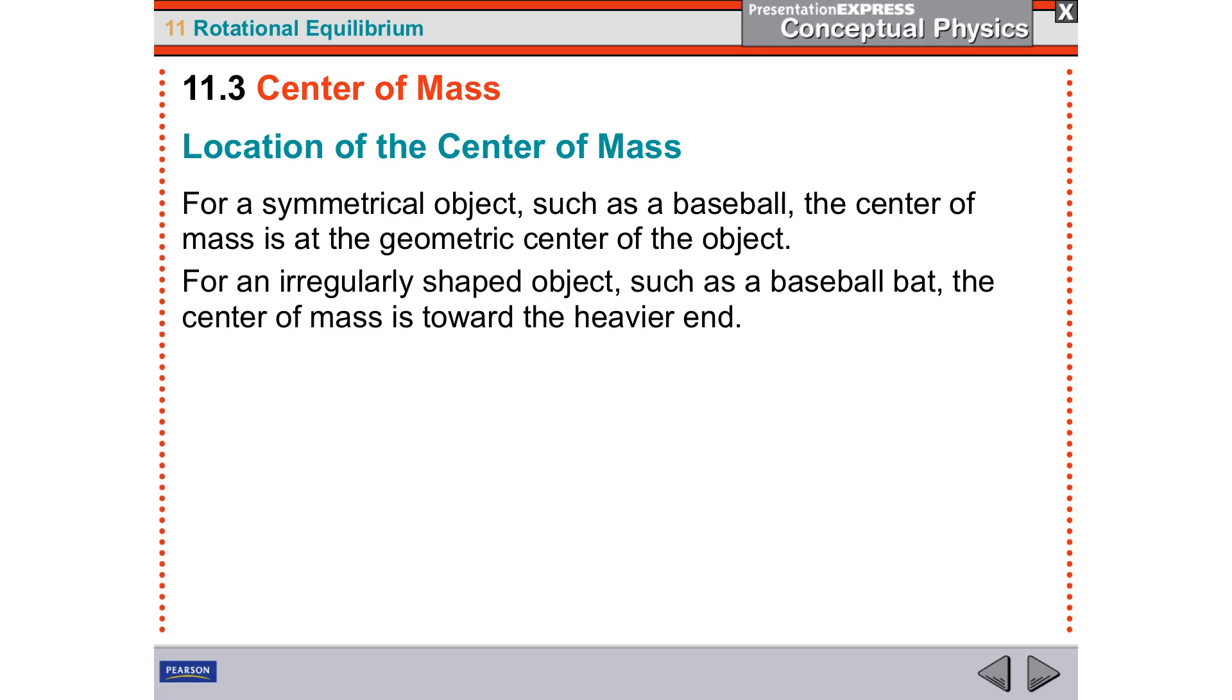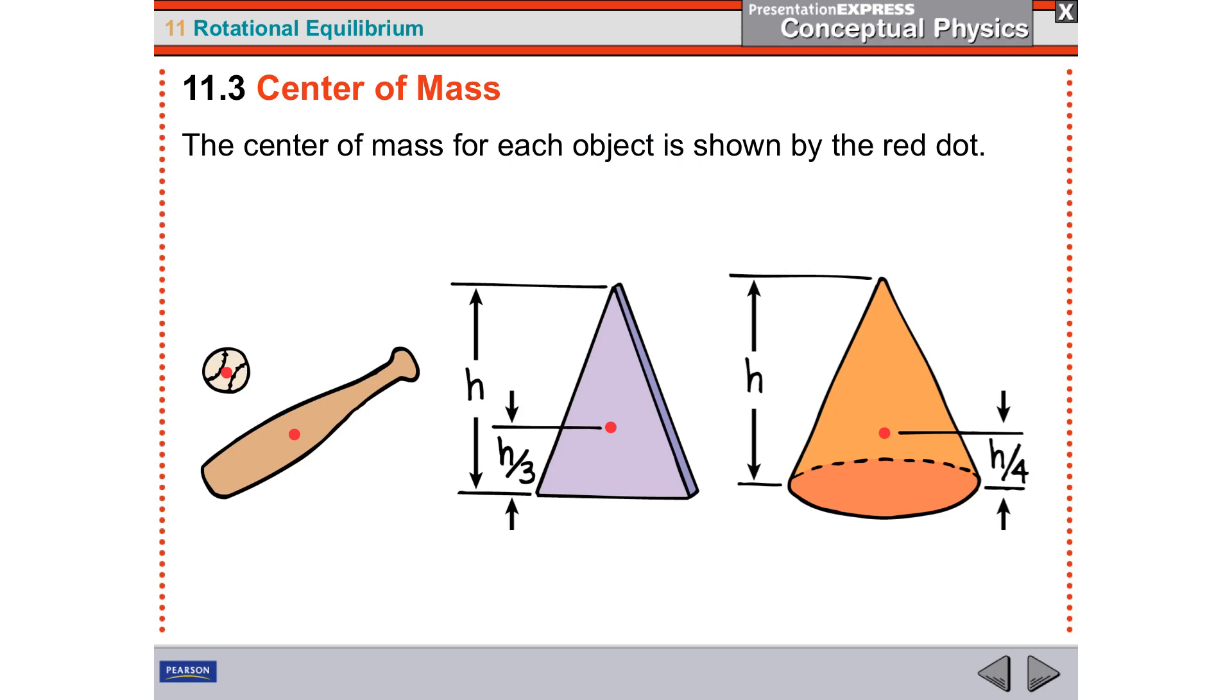If you have something uniform made out of the same substance, often you can mathematically figure out where the center of gravity or center of mass is. If something is made out of more than one substance, the center of mass is going to be towards the heavier substance, obviously, because that's where most of the material or the mass that makes up the object is. And so it's wherever the greatest density happens to be.